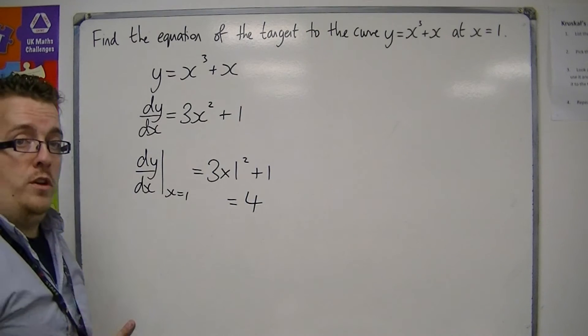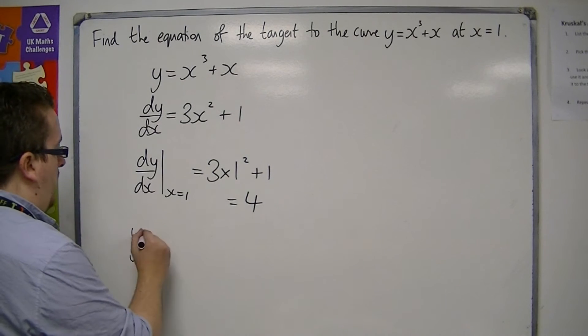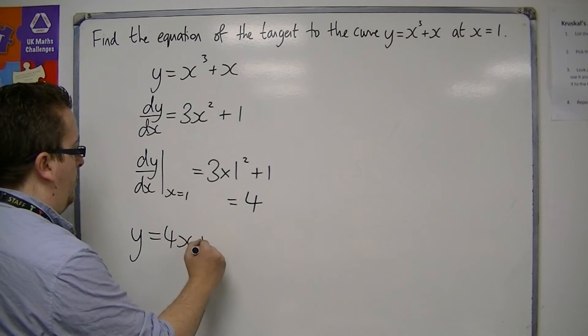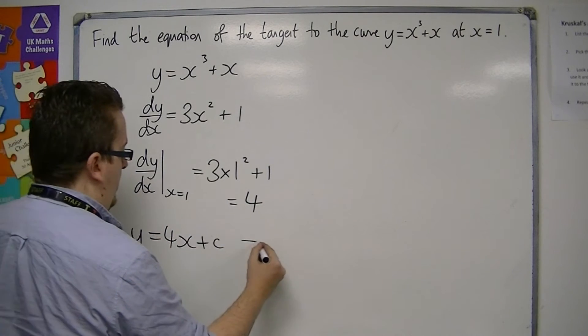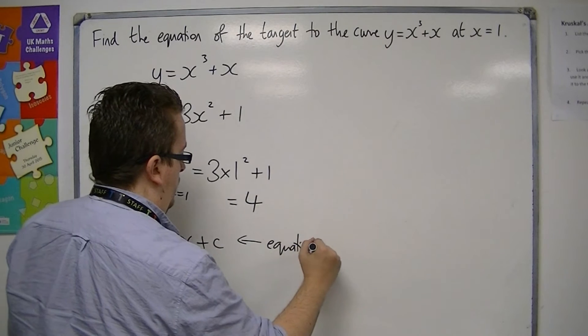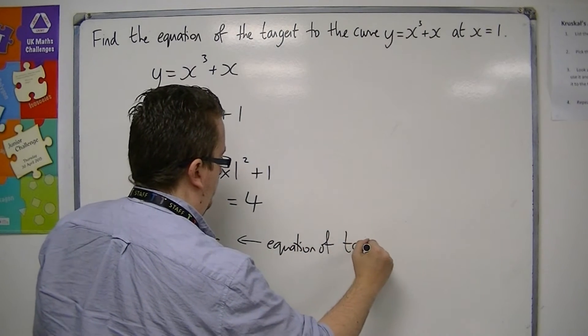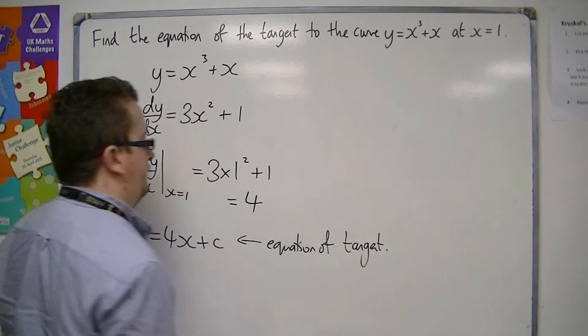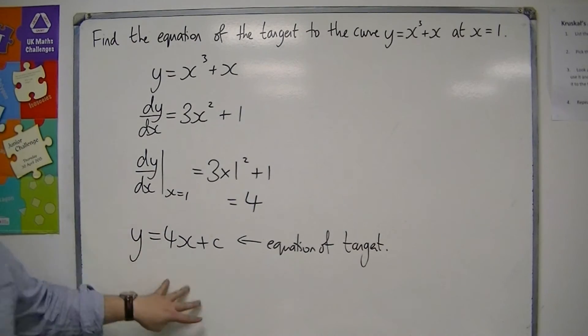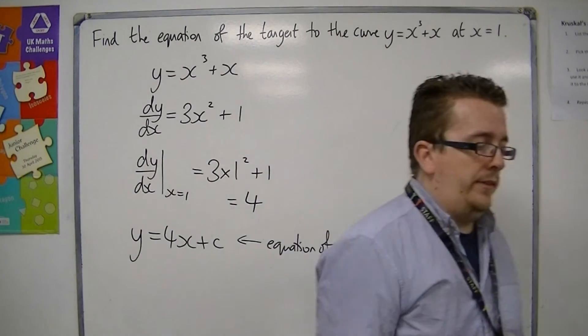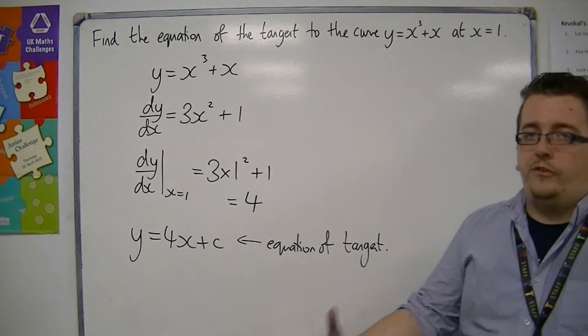So the equation of the tangent is y equals 4x plus c. So that's my equation of the tangent. Now I need to work out what the value of c is. So I need to know where it crosses the y-axis.